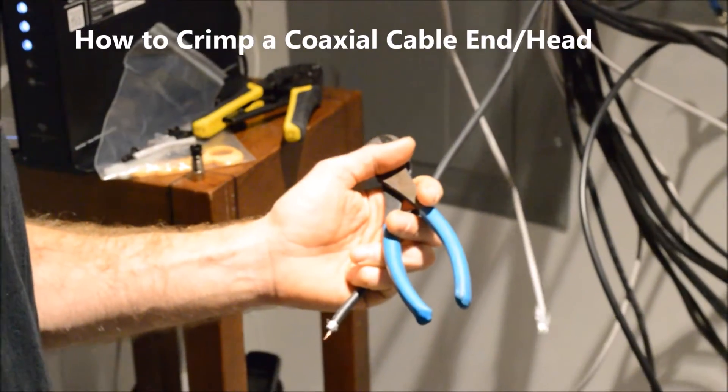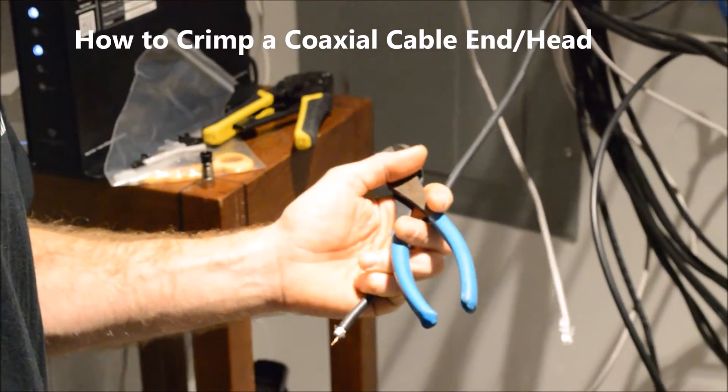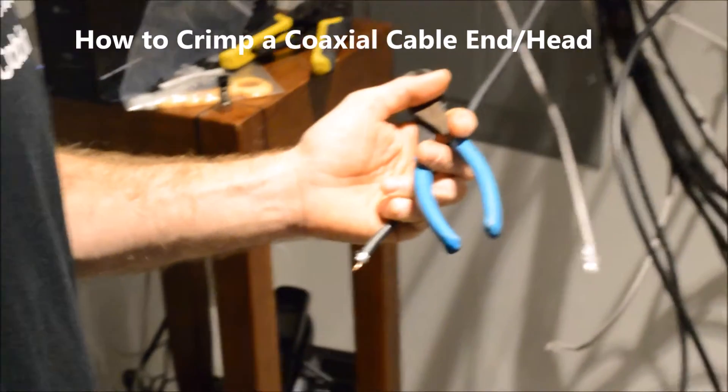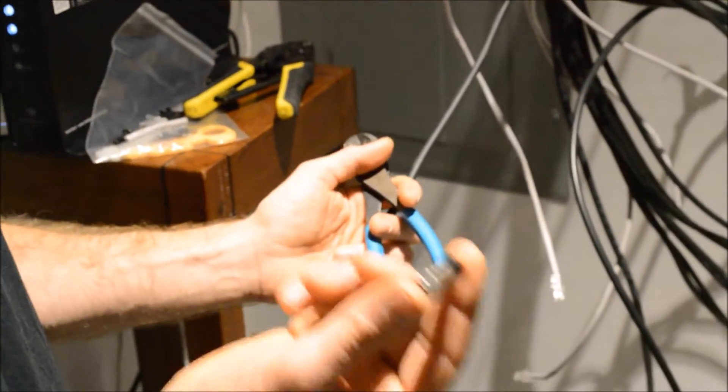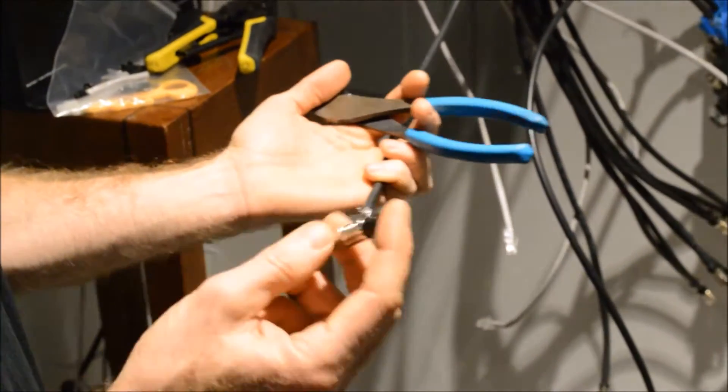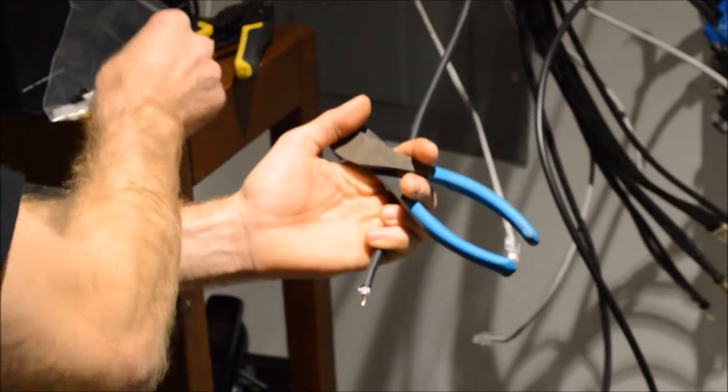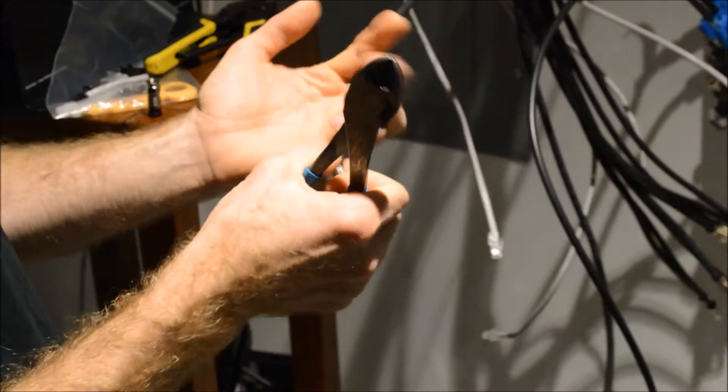So we have Paul and Matt here. Paul is doing the patch panel and Matt, what are you getting ready to do? I'm about to put a compression crimped end onto an RG6 cable, RG6 coaxial cable.